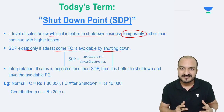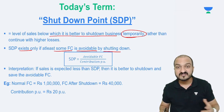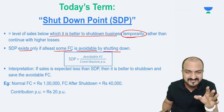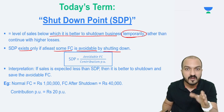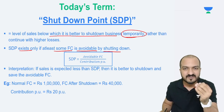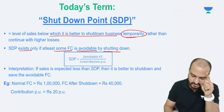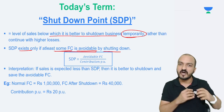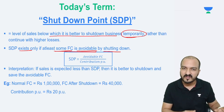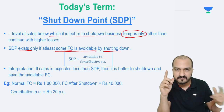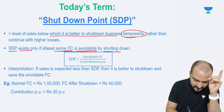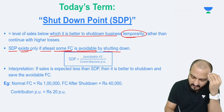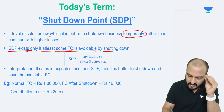By shutting down the business, you should get some benefit at least. If you shut down, your sales are gone, your variable cost is gone, your contribution is gone — but fixed cost will still remain. So shutting down should give you some benefit in terms of saving some fixed cost. The concept of shutdown point will exist only and only if there is at least some fixed cost which is avoidable by shutting down.